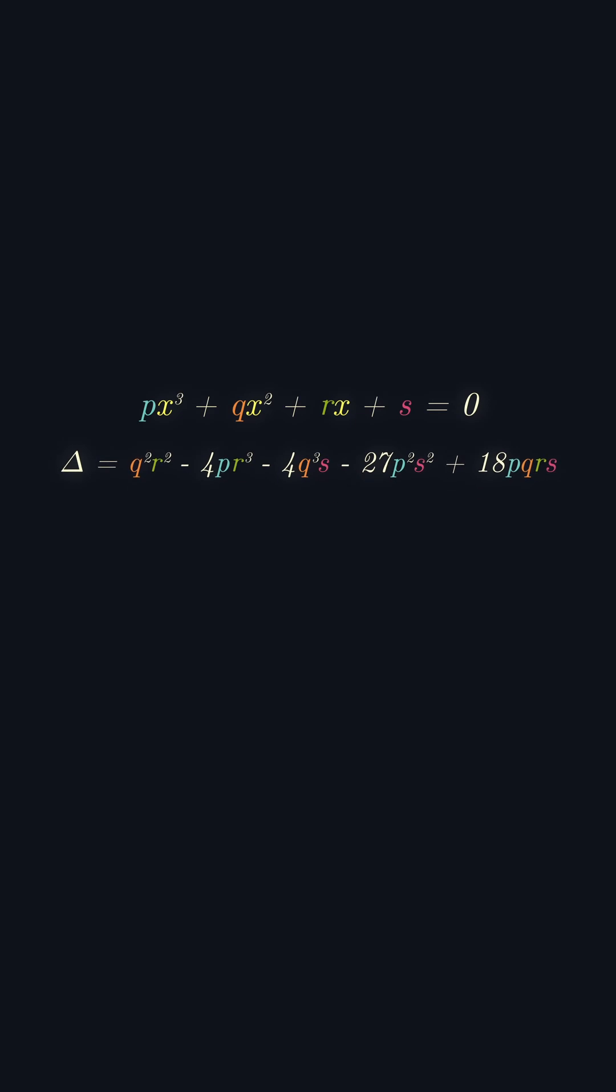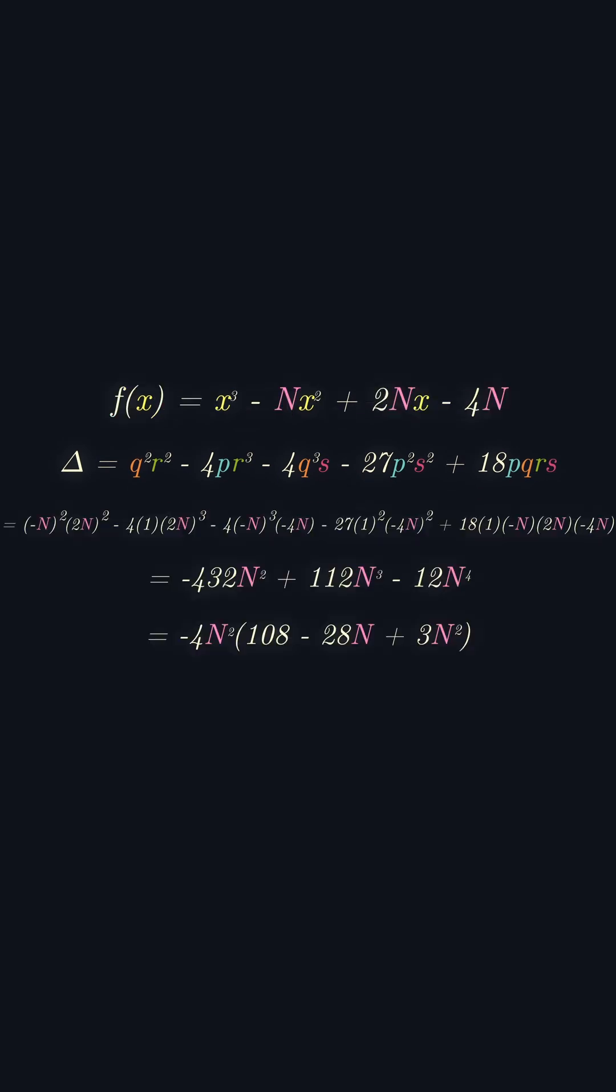Input these coefficients into the cubic discriminant and it turns out that this is negative. So for all positive real values of n, f of x has two complex and one real root.